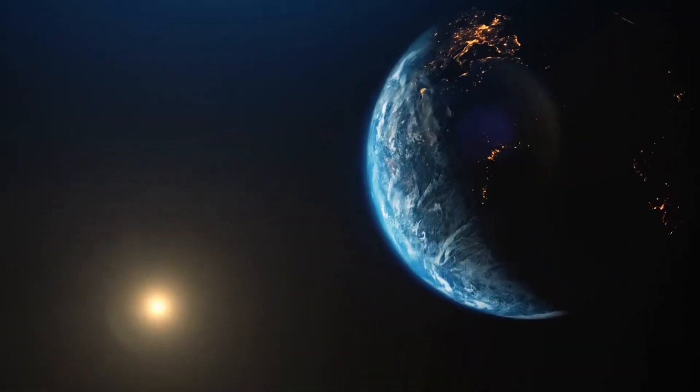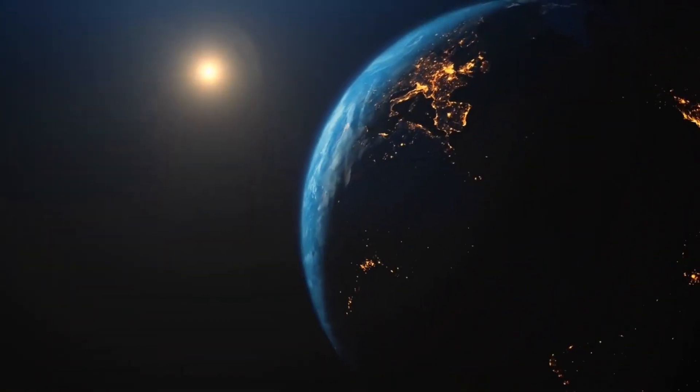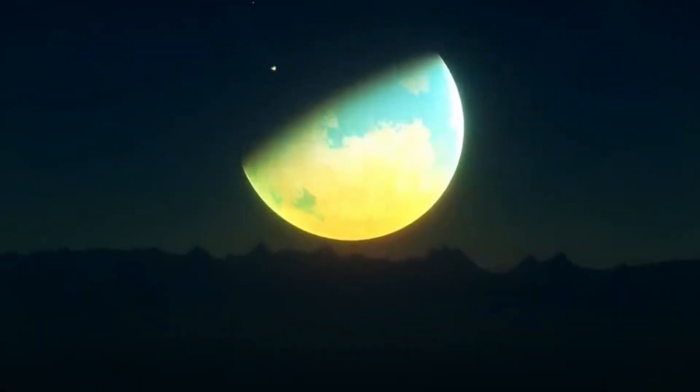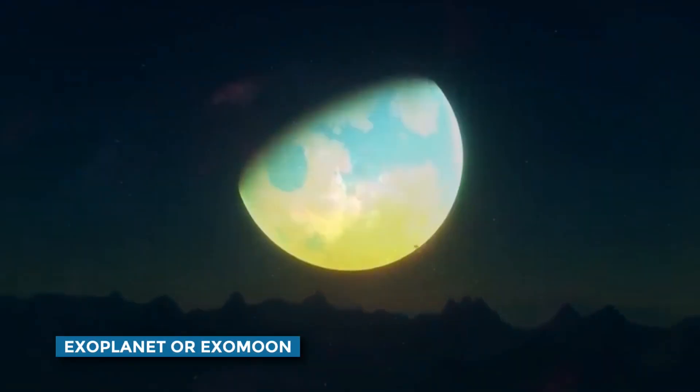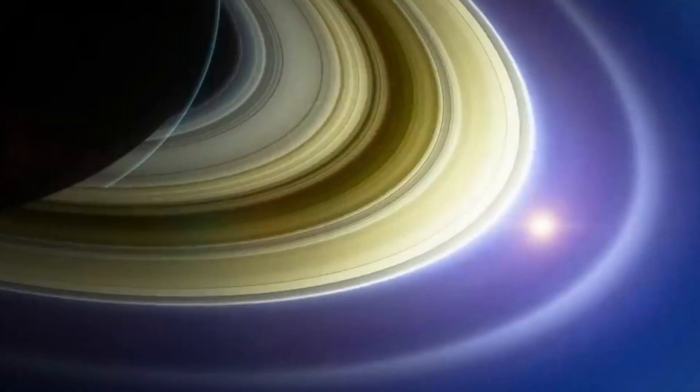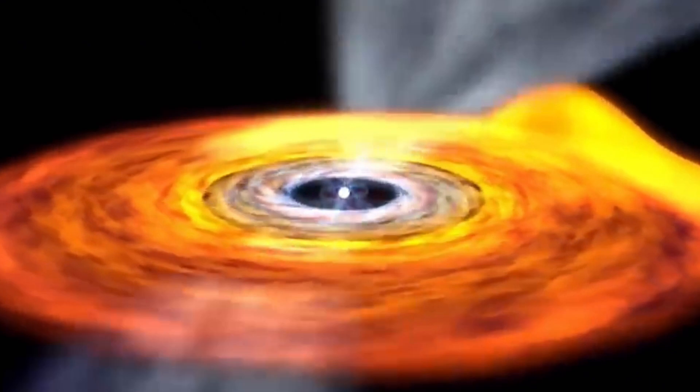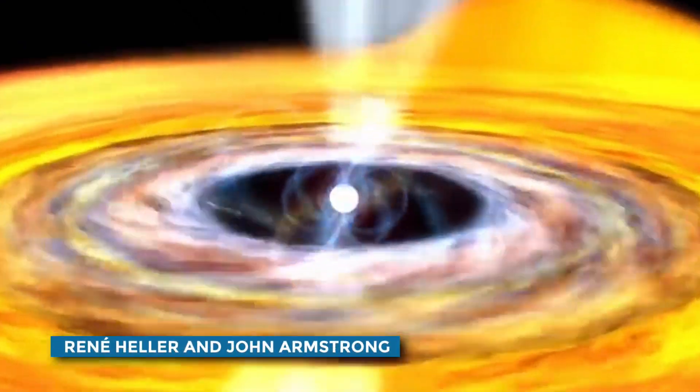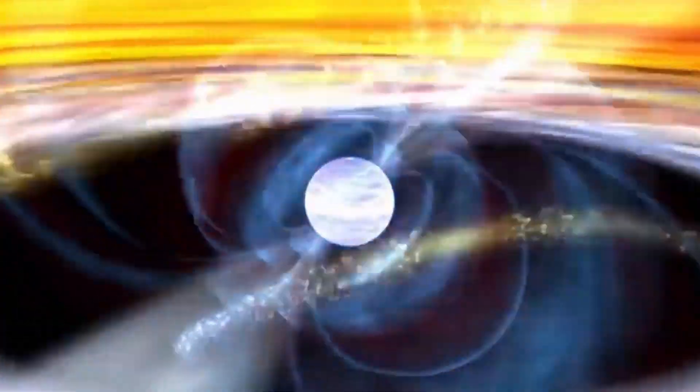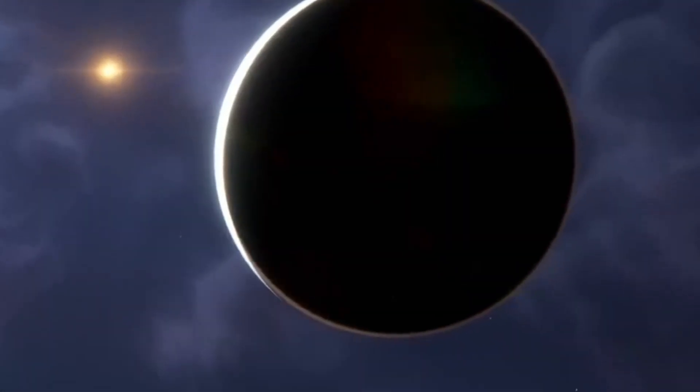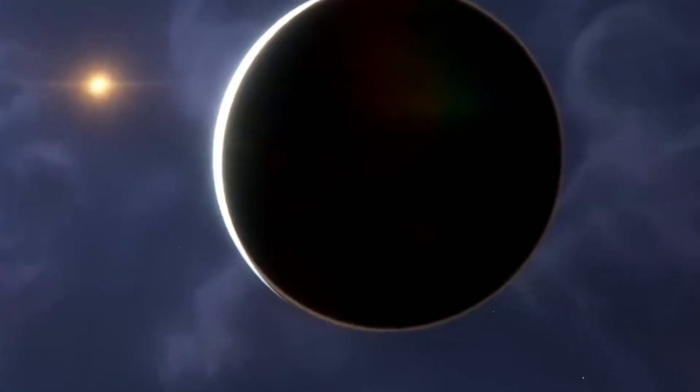A super-habitable planet is a hypothetical type of exoplanet or exomoon that may be better suited than planet Earth for the emergence and evolution of life. The concept was initially introduced in 2014 by René Heller and John Armstrong. Both Heller and Armstrong proposed that a series of basic characteristics are required to classify an exoplanet or exomoon as super-habitable.